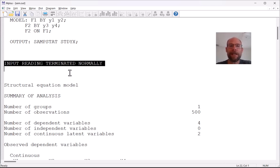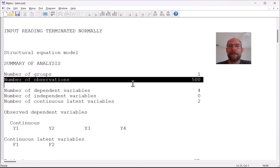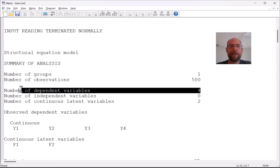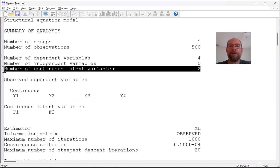So this is a good sign and then we can under the summary of analysis determine the number of observations. In this case the sample size was 500 cases. It's always good to check that that also matches with your expectations and the model here had four dependent variables namely the observed indicator variables of the two factors f1 and f2 and those factors f1 and f2 are our two continuous latent variables.